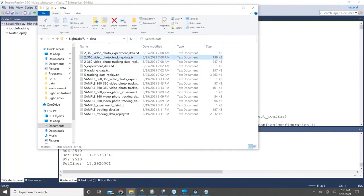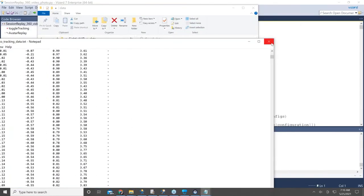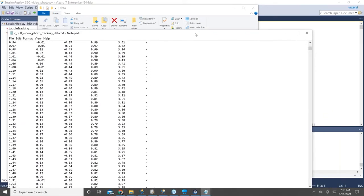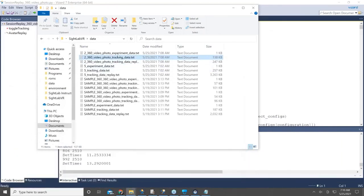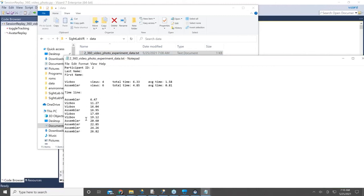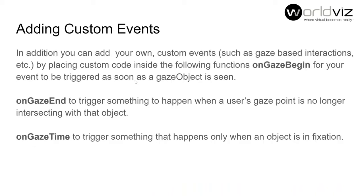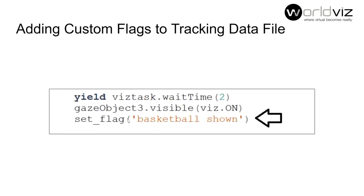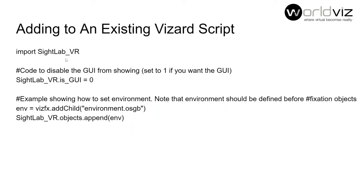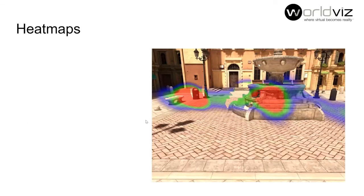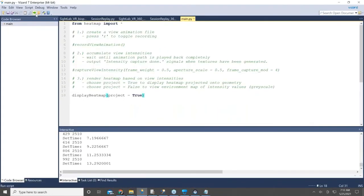I get the same data files for 360 sessions: the tracking data file with timestamp, XYZ gaze intersect coordinates, and pupil diameter, along with custom flags or additional tracking data, and the experiment data file showing view counts, average view time, total view time, and fixation timeline for each area of interest. If you have Sitelab Pro you can access the code and implement gaze-based interactions — for example, using the OnGazeTime function to trigger something in your scene when the fixation threshold is met, or setting custom flags when an object becomes visible. You can also integrate it with an existing Wizard script with just a few lines of code. Additionally, there's a heat map visualization run as a separate script.